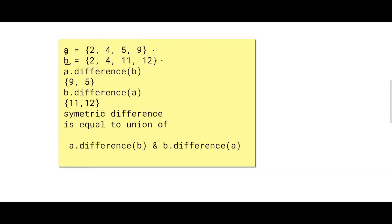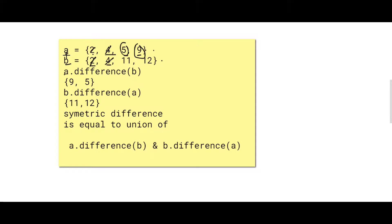As you can see, a.difference(b) means set a minus set b. In set a the numbers are 2, 4, 5, 9 whereas in set b the numbers are 2, 4, 11, 12. We have to subtract the common elements from set a. Since 2 and 4 are present in both sets, we cancel them out. The remaining elements 5 and 9 are unique to set a and are not present in set b, so we return them as the answer.